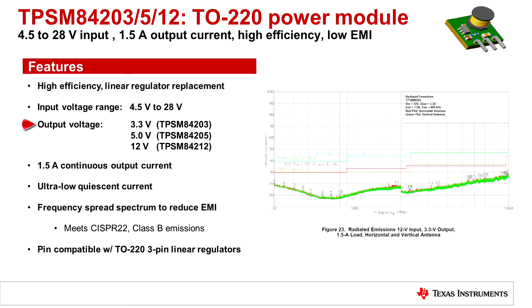and 12 volt output for the TPSM 84212. All three devices are capable of delivering 1.5 amps of output current.